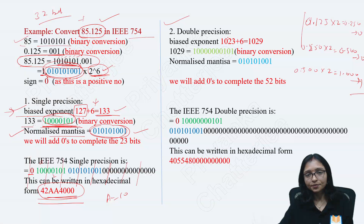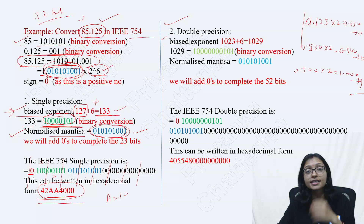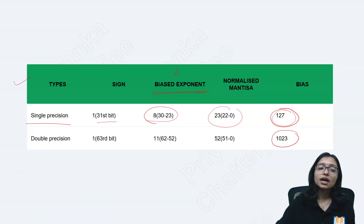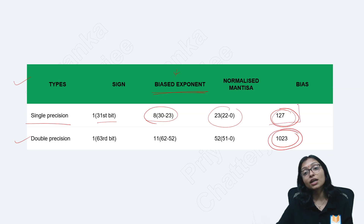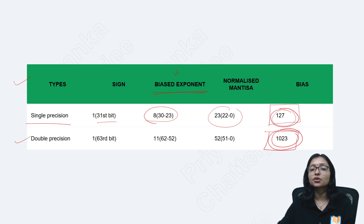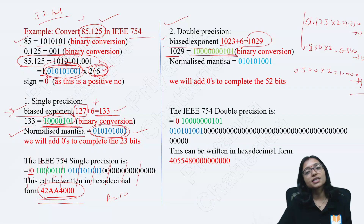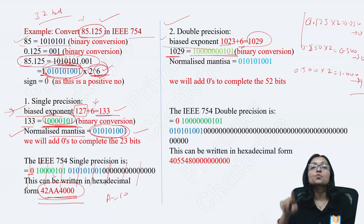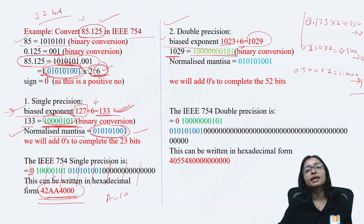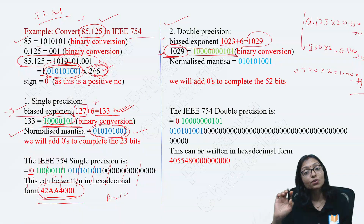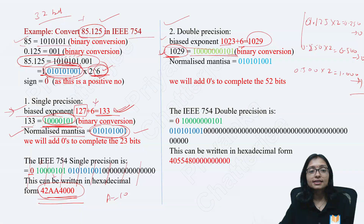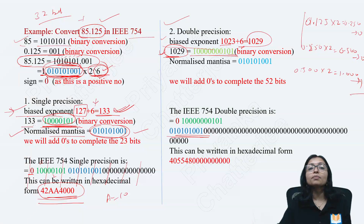Whenever I come to double precision, I will represent it the same way. The only change will be in the biased exponent, because for 64-bit the bias value is 1023. These bias values are fixed: 127 for single precision, 1023 for double precision. So 1023 plus 6 gives 1029. I represent this 1029 in binary — this is my exponent part. For single precision I had exponent part 133, here I get 1029. This is the only change. The mantissa part remains as it is — no change.